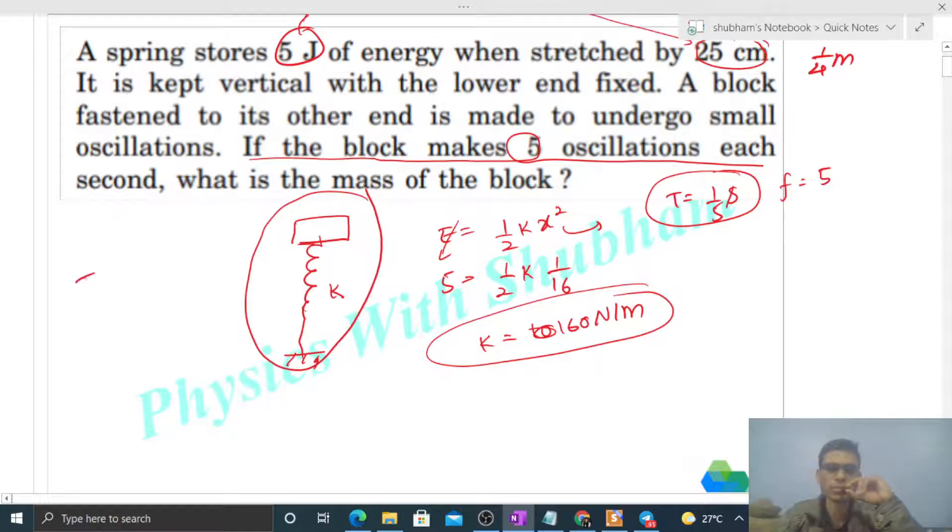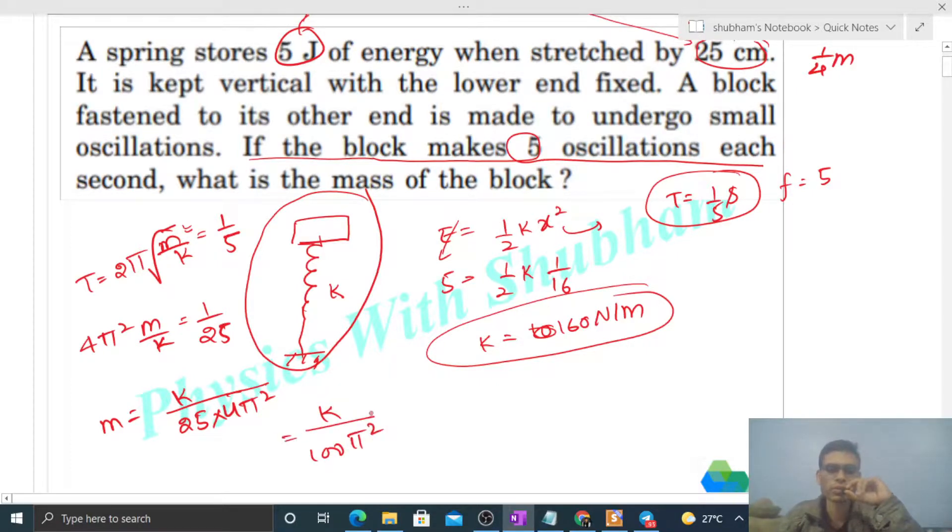The time period for this spring block system is 2π times the square root of m by k. That is given as 1/5. From here we can calculate the value of m. m by k equals 1/25, so m will be k divided by 25 times 4π squared. That is k upon 100π squared. The value of k is 160 divided by 100 times π squared, so this will be the value of mass in kilograms.